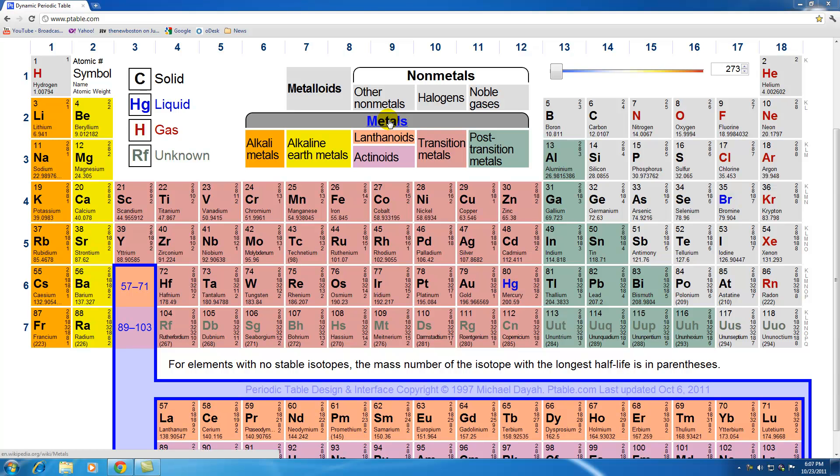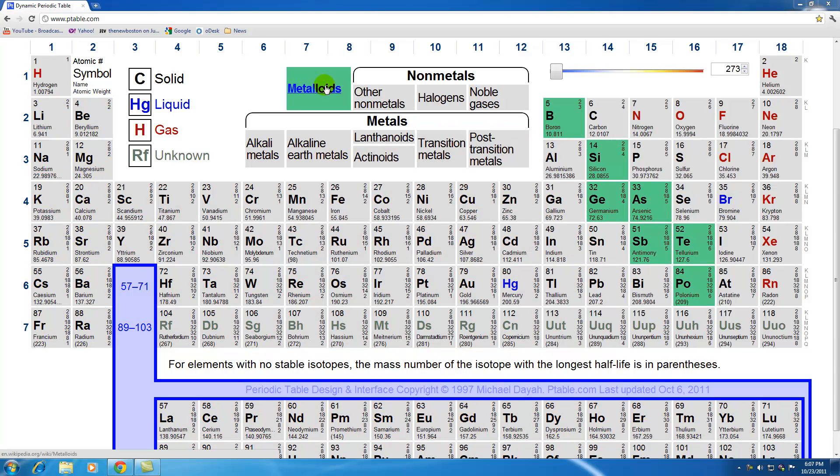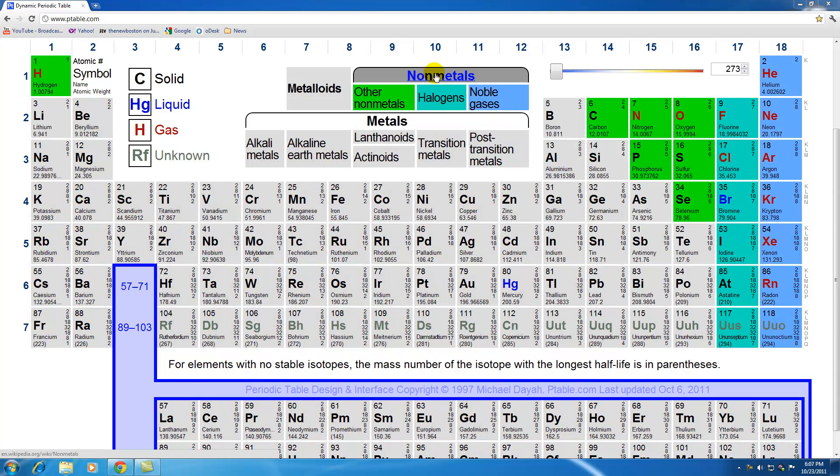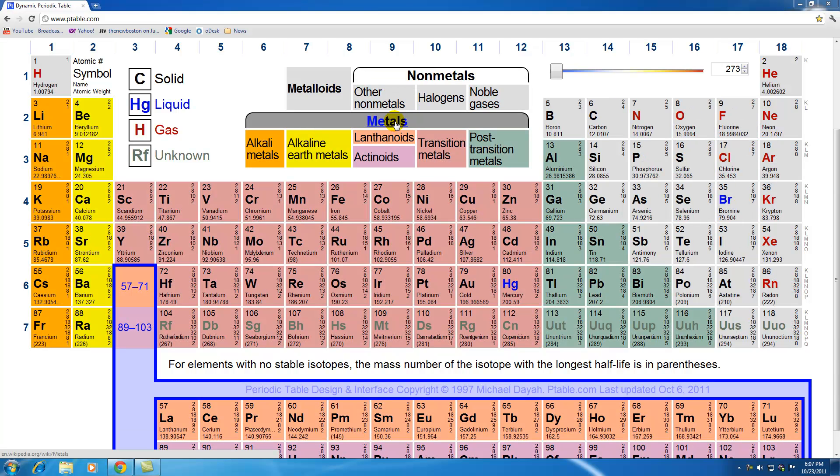So if we select the metals they all show color and everything else is grayed out. If we select non-metals everything else gets grayed out. So that's why I love this periodic table, because it makes my tutorial making like a hundred times easier.